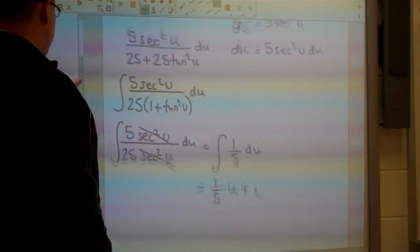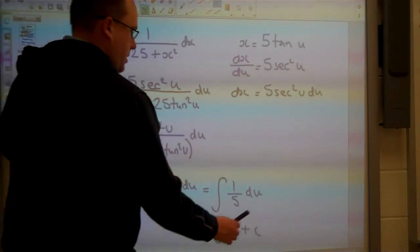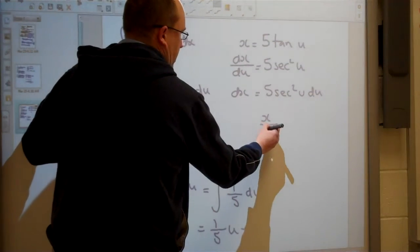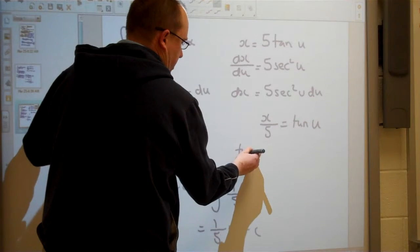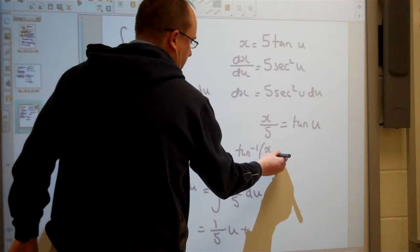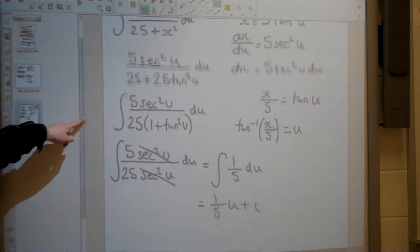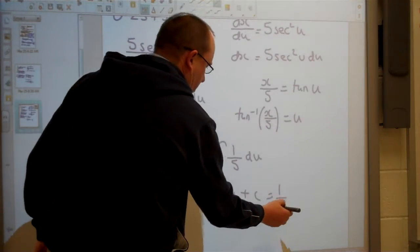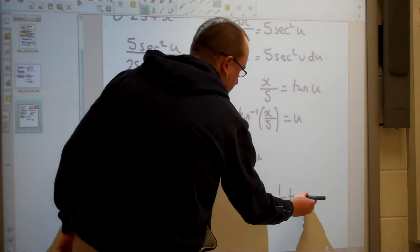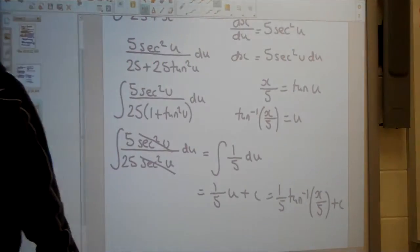Now I'm going to go back to my original part to substitute back in here. So if x equals 5 tan u, then what that says is that x over 5 equals tan u. And then if I do tan to the negative 1 here, tan to the negative 1 of x over 5 would equal u. And then I can substitute that into my answer down here. So the 1 fifth, tan to the negative 1 of x over 5 plus c.